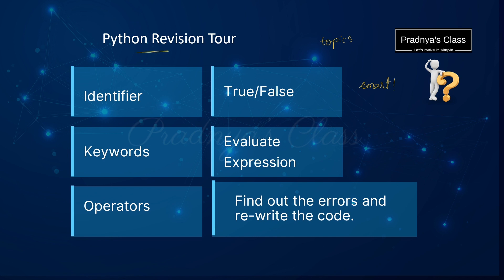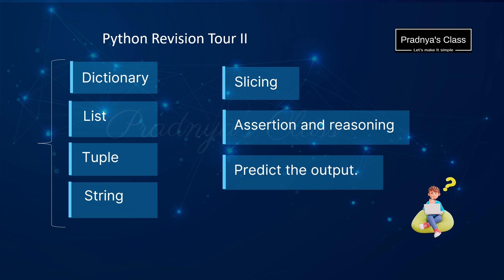Let's talk about the topics from the first chapter, that is Python Revision Tour. In section A, generally you will be getting questions based on tokens, in which the question will be based on identifiers, keywords as well as operators. You may be getting questions in the form of true or false. The basics of Python should be clear. Along with that, you will be getting a question to evaluate the expression which is generally based on operators. So make sure you are clear with the concept of the precedence of operators, which will be helpful for evaluating the expression. In section B for two marks, you will be getting a question in which you need to find out the errors and rewrite the code.